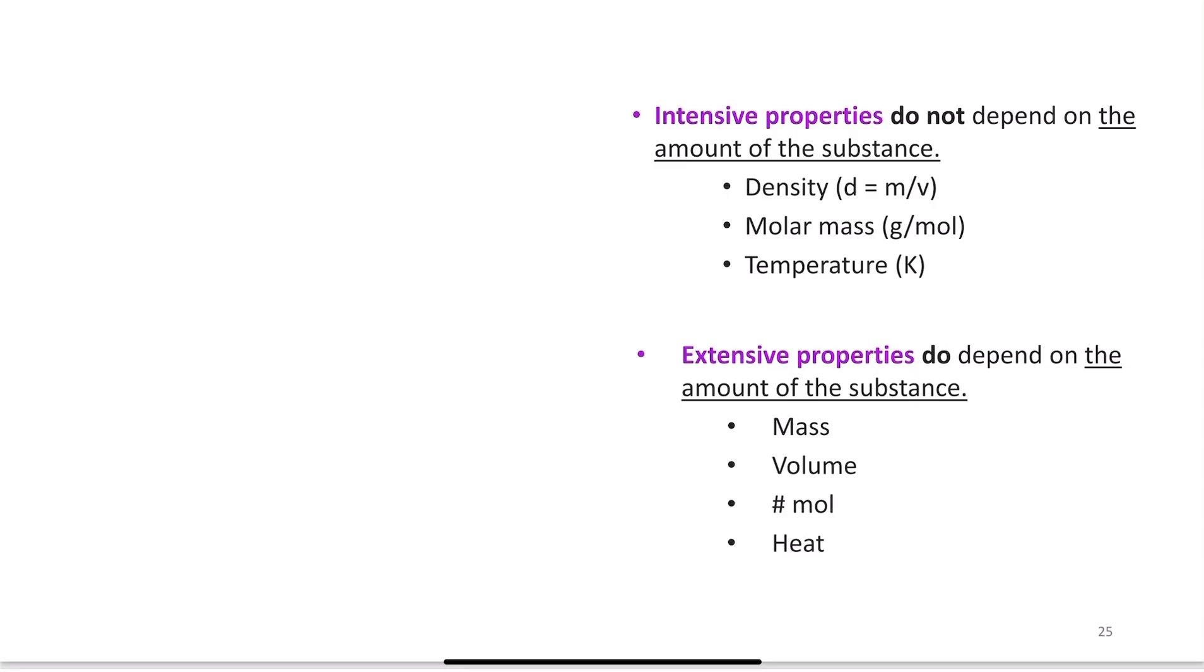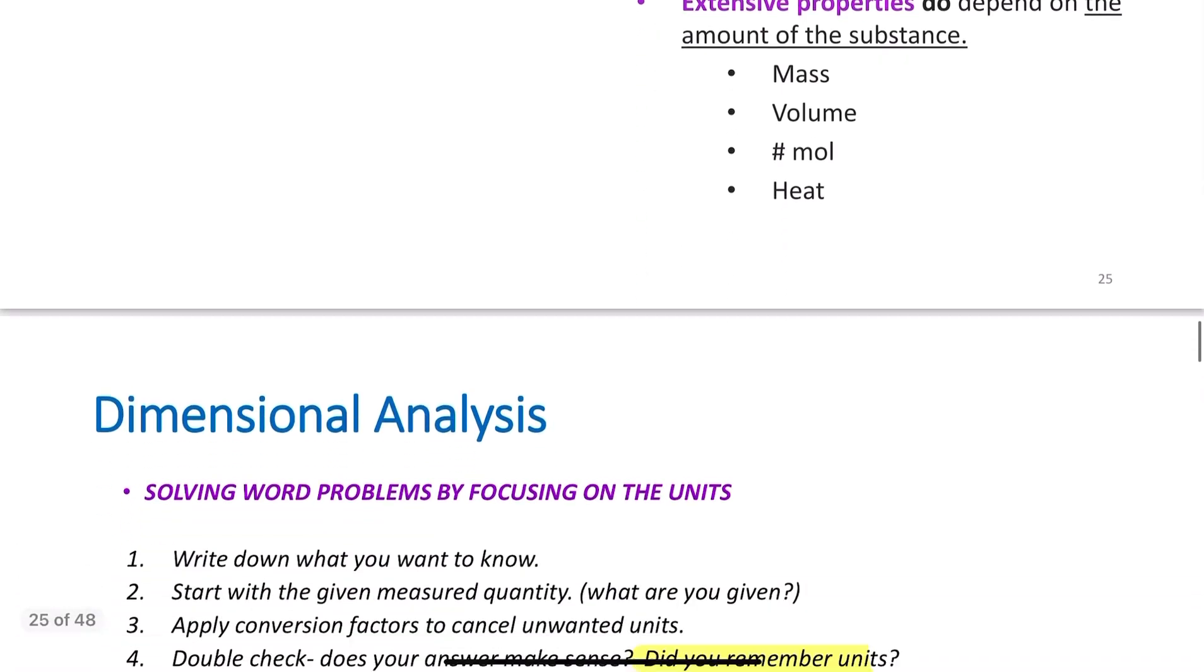An extensive property, on the other hand, is dependent upon the amount of substance present. 100 grams of gold weighs a lot less than 1,000 grams of gold - 10 times less, to be exact. The volume of 100 grams of gold will be less than the volume of 1,000 grams. The number of moles - we'll talk about moles more in Chapter 2, but a mole is a number word. It tells me how many of something are present. Like a dozen eggs means 12. A mole tells me a very specific number of atoms. The number of moles of gold in 100 grams versus 1,000 grams will be different. Heat, which we'll discuss in Chapter 7 thermochemistry, would also be different for 100 grams versus 1,000 grams. Heat and temperature are not the same thing.